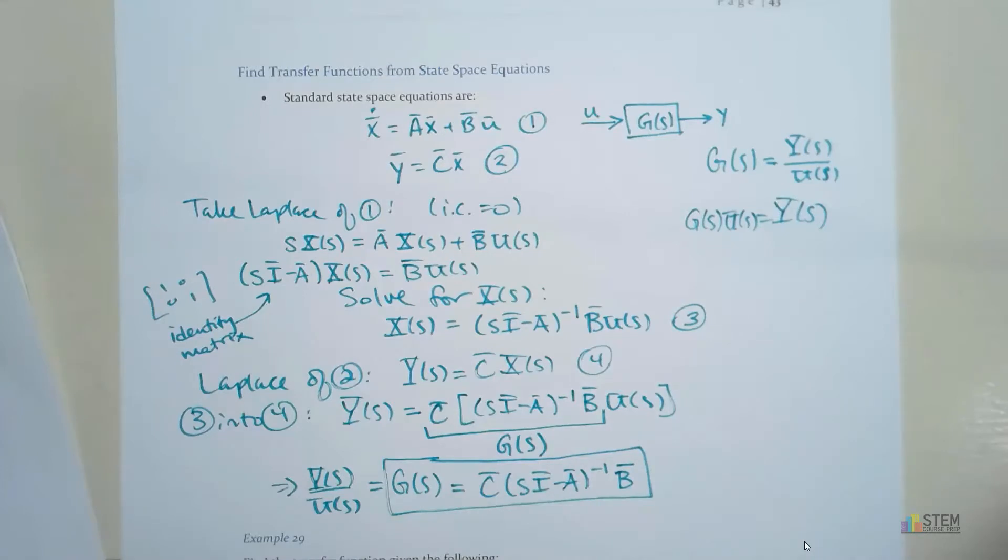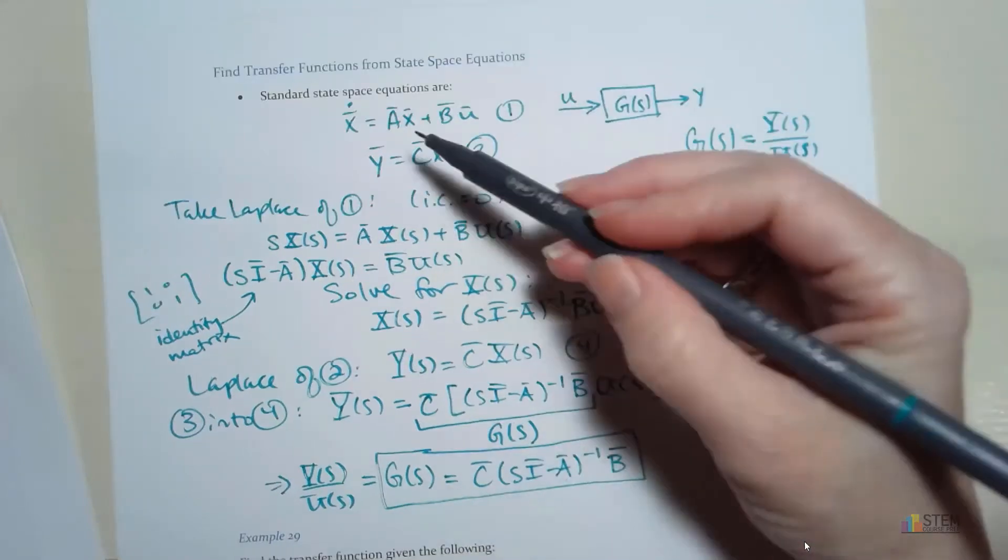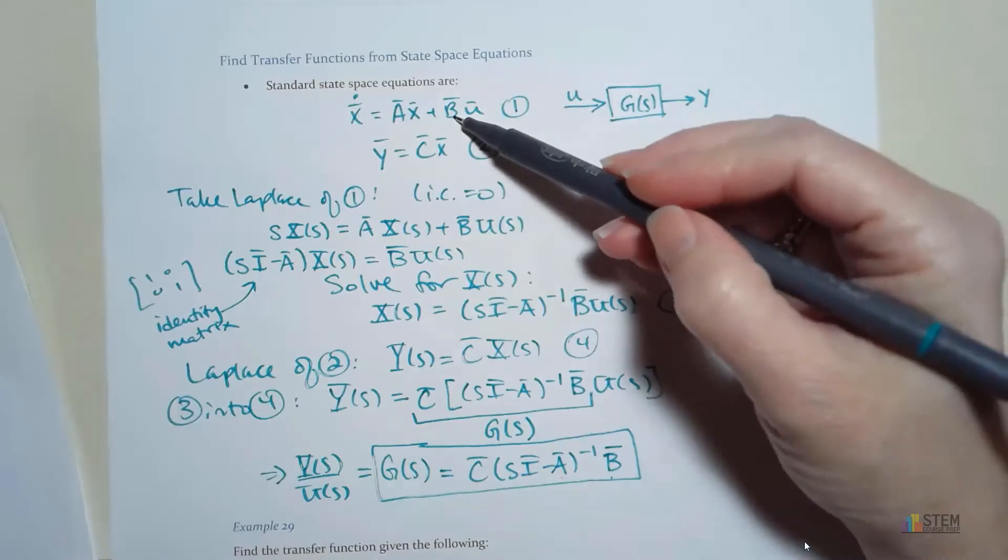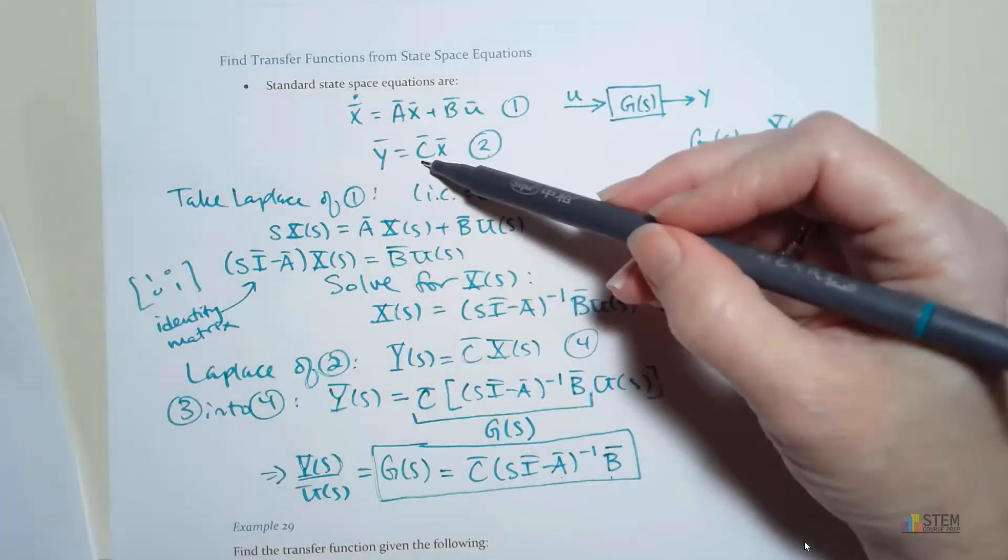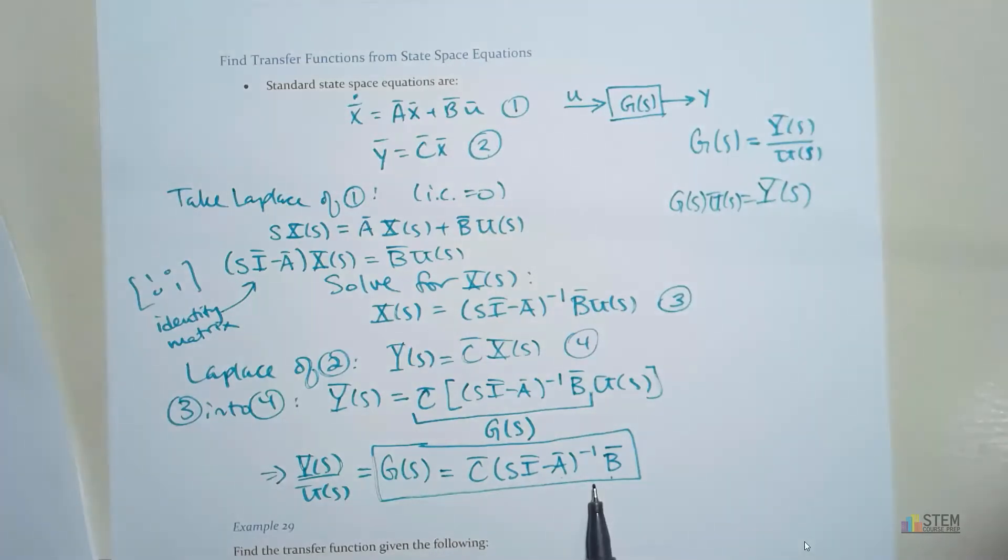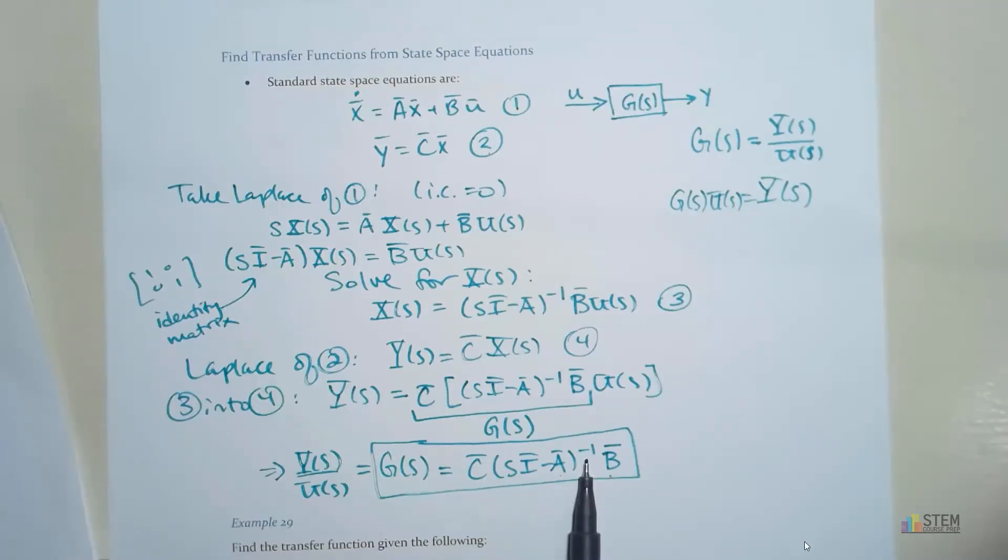Very simple equation. All you need to do is pull out your three matrices. So this A right here comes from this matrix. B is this matrix here and then C is that output matrix. So you're just going to take those plug them in and that's going to give you G of S.